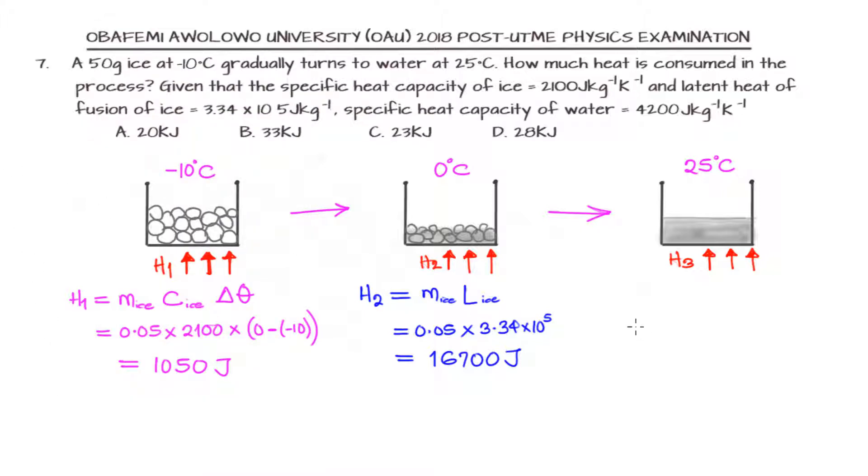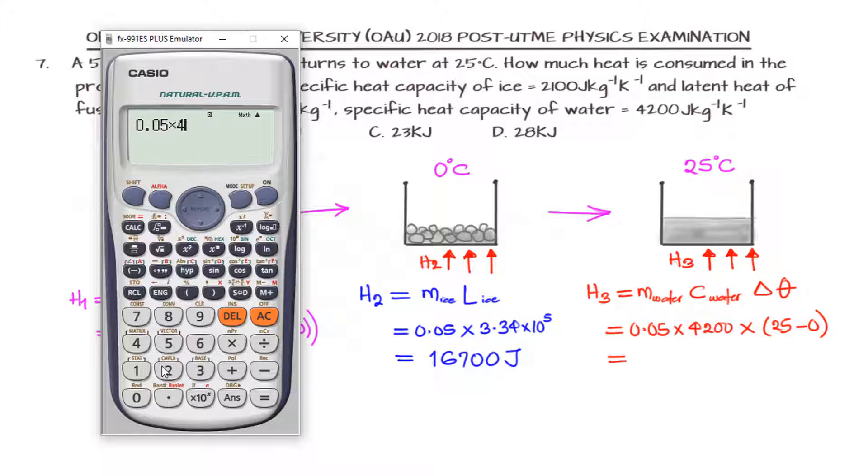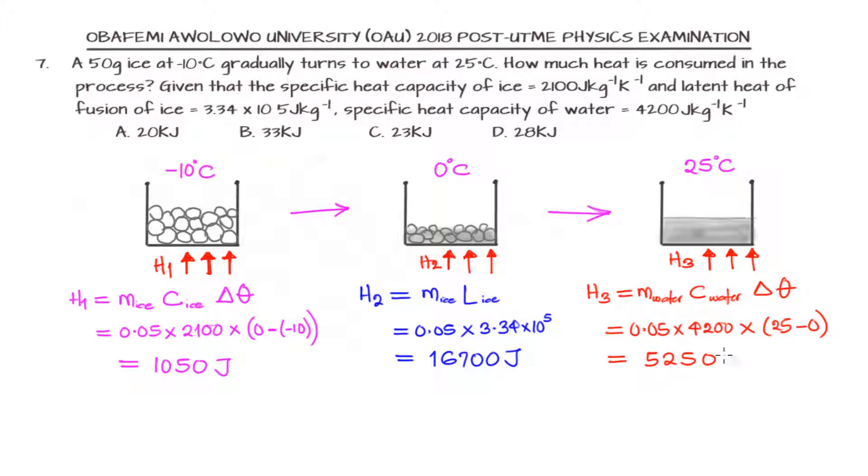After we have gotten the ice transformed into water, the water will start from 0 degrees Celsius to 25 degrees Celsius. To calculate the heat consumed, we use MC multiplied by change in theta. The mass of water is going to be the mass of the ice because it's still the same substance. We have 0.05 times 4,200 times 25, that's 5,250 joules.